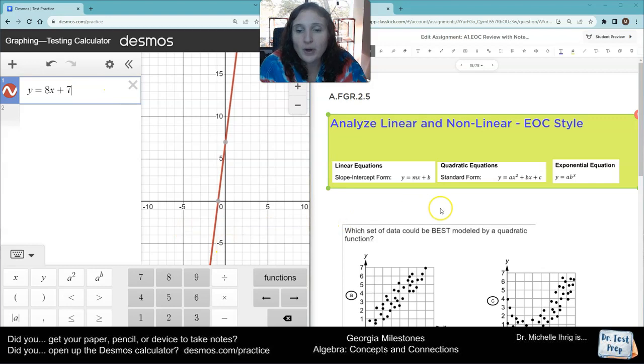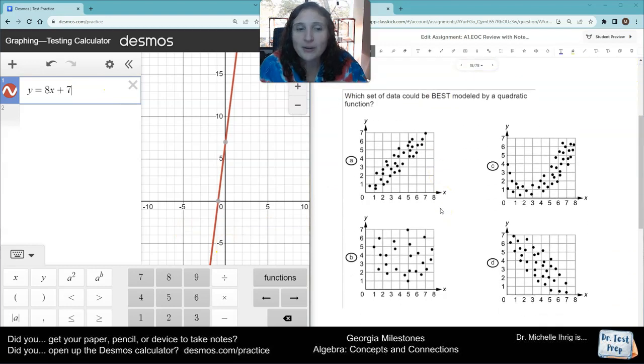Now, is it going to match one of these pictures? No, but it's going to tell us that a linear function is a straight line. And so right away you can say, well, I know it's not letter a because that's a line.